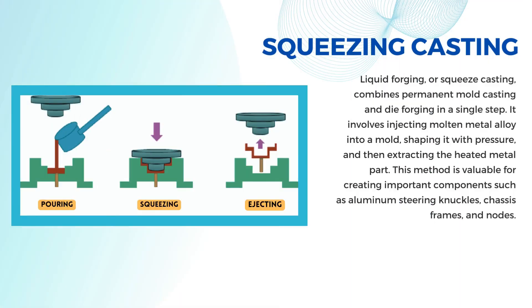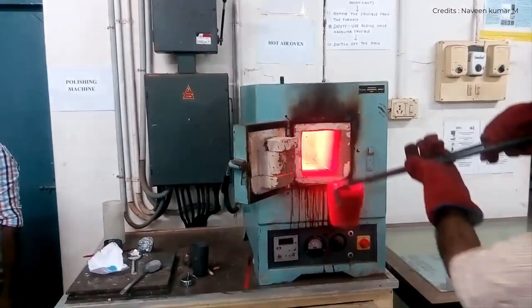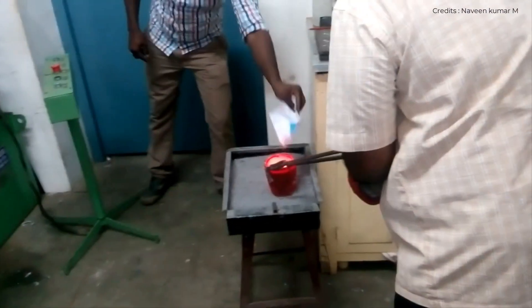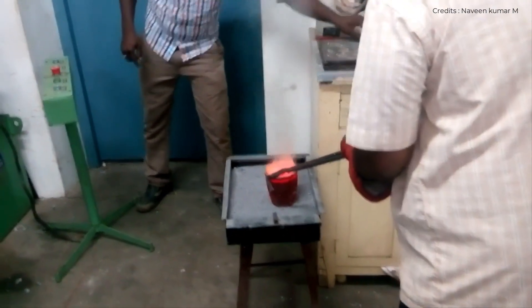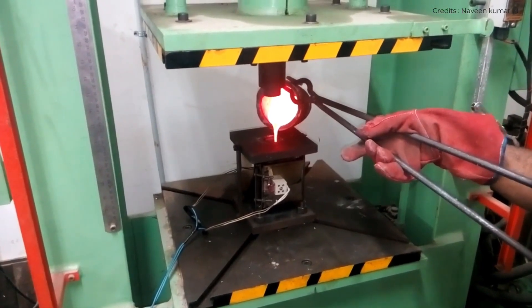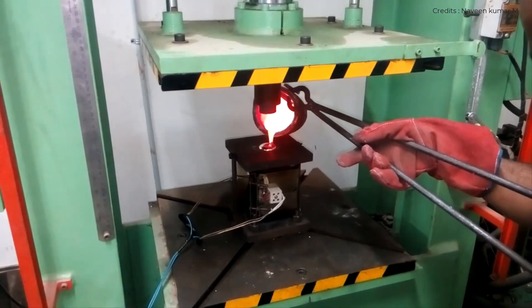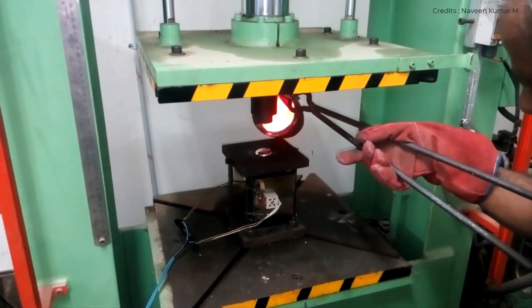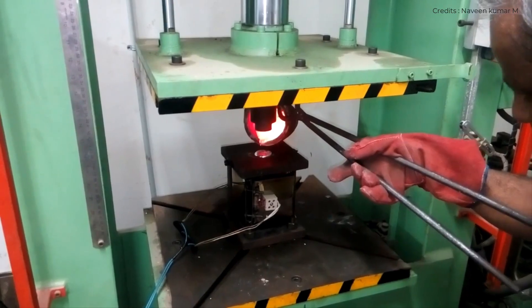Liquid forging, or squeeze casting, is a unique way of shaping metal. It combines permanent mold casting and die forging into one step. They inject a certain amount of melted metal alloy into a mold and use pressure to shape it. After that, they heat the metal part past its melting point and take it out of the mold. This method is handy for making important parts like aluminum steering knuckles, chassis frames, and nodes.